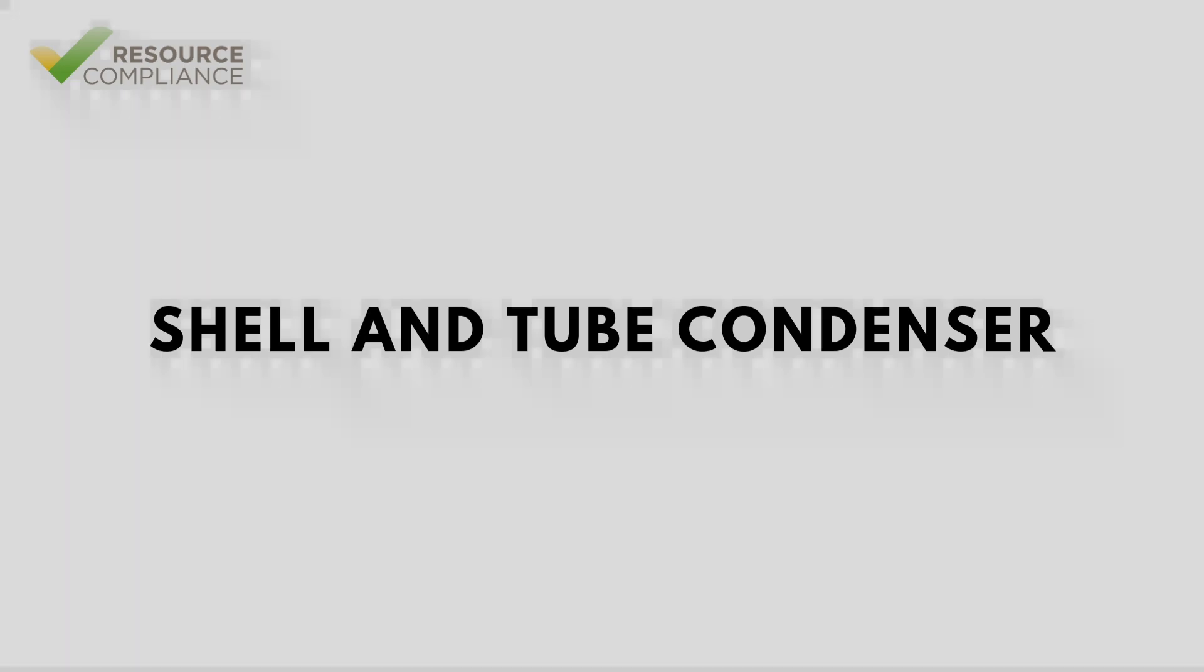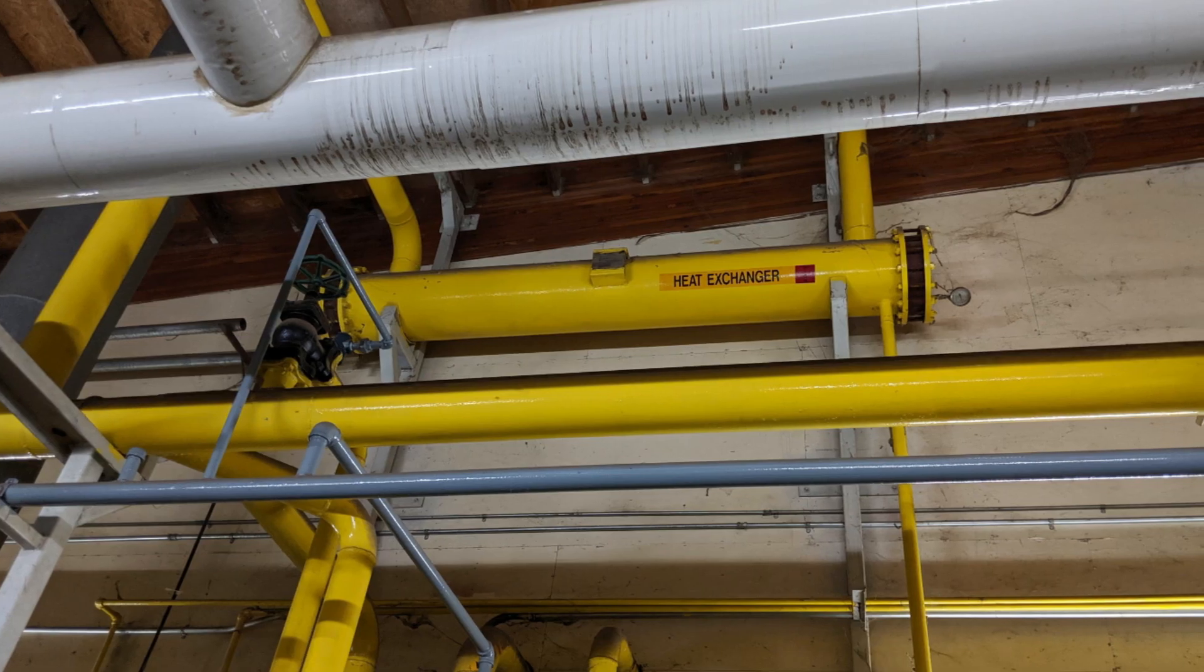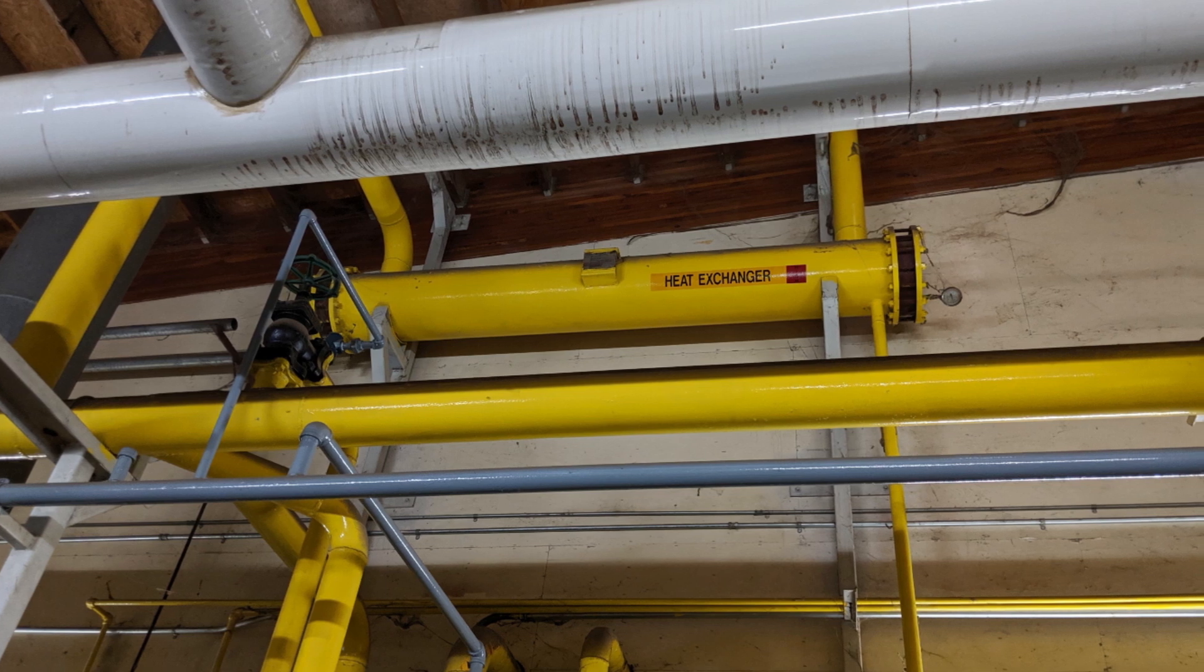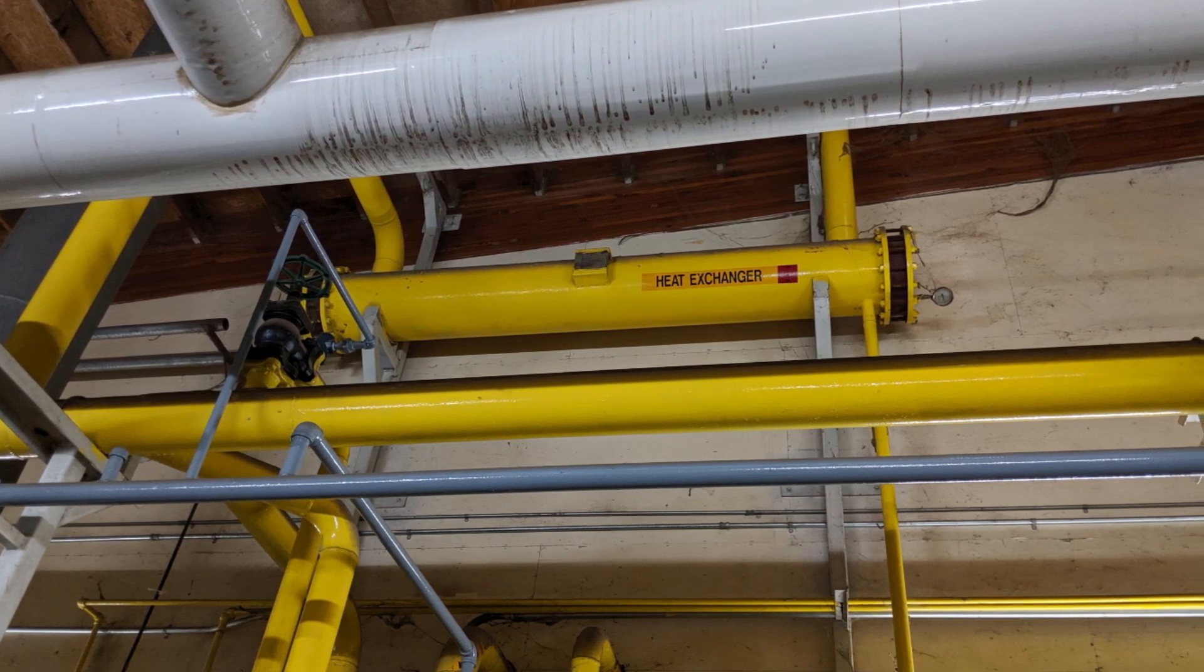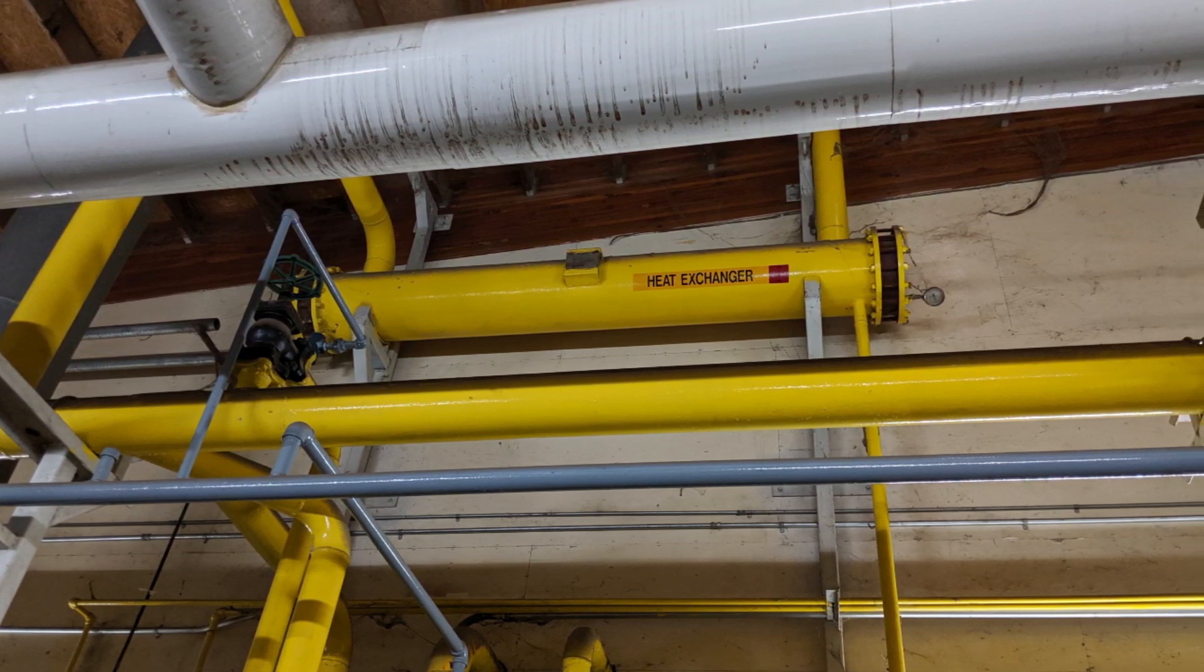A shell and tube condenser consists of a cylindrical shell housing multiple tubes, which provide a large surface area for heat transfer. The refrigerant and water flow through separate paths, allowing heat exchange to occur efficiently.